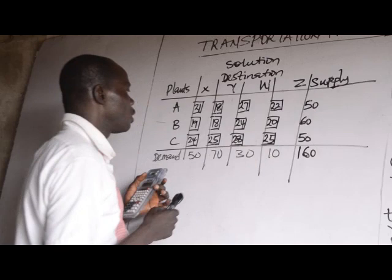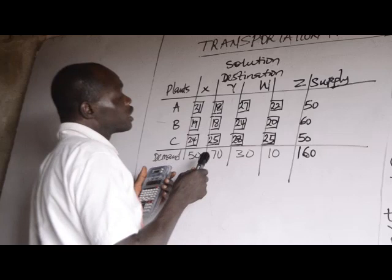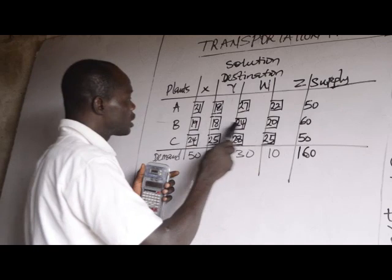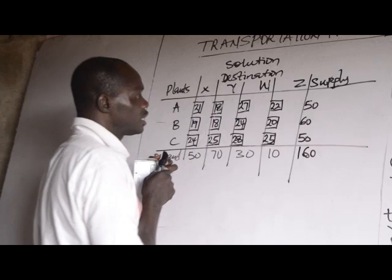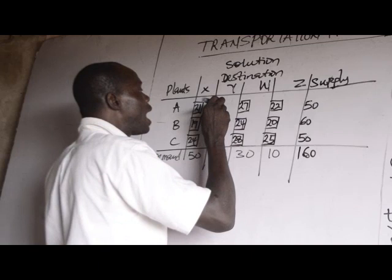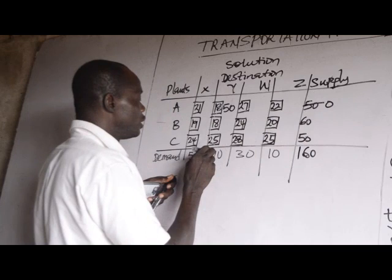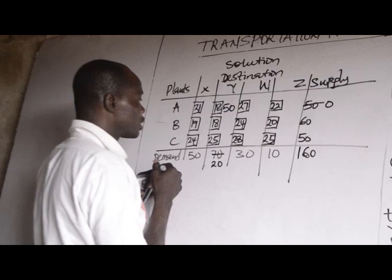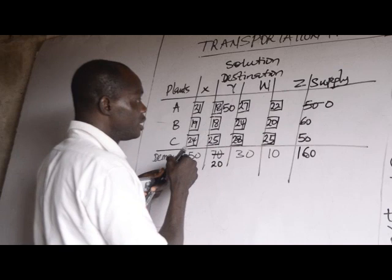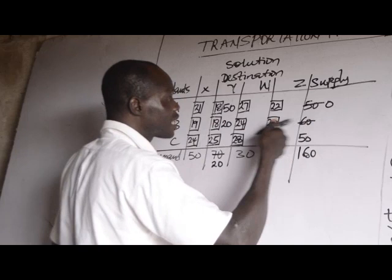We can start allocation now. The least cost is 18, since 18 is lower than 19 and every other cost. We start allocation from that cell. Row A has supply 50 and column Y has demand 70, so we allocate 50 there. Row A is exhausted (0 left). Column Y has 70 minus 50 = 20 remaining. The next least cost is again 18 — we allocate the remaining 20 from row B to column Y, leaving row B with 40.